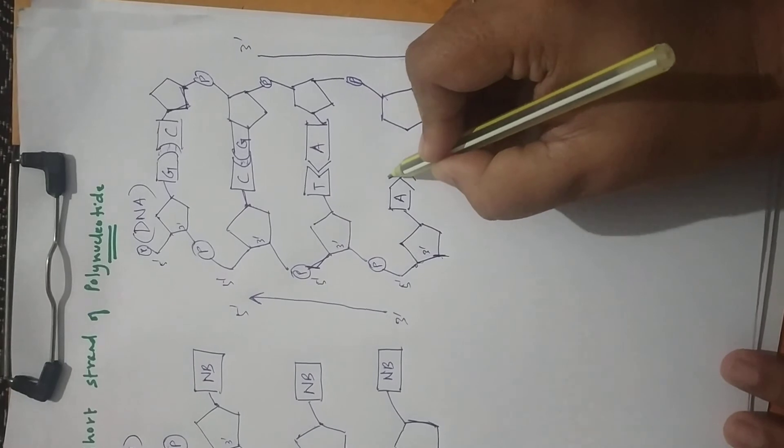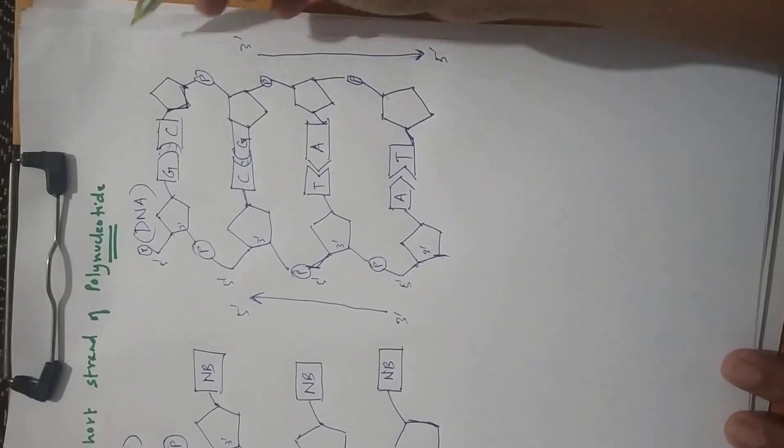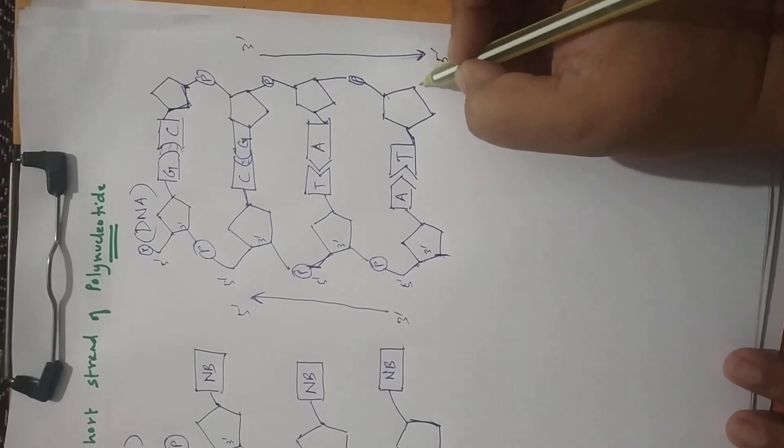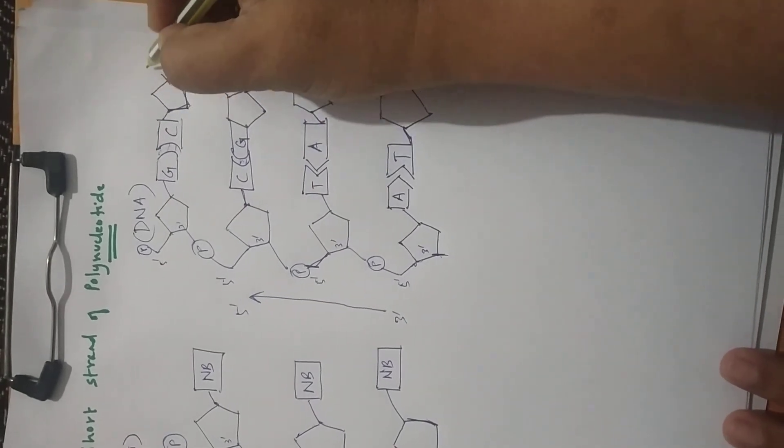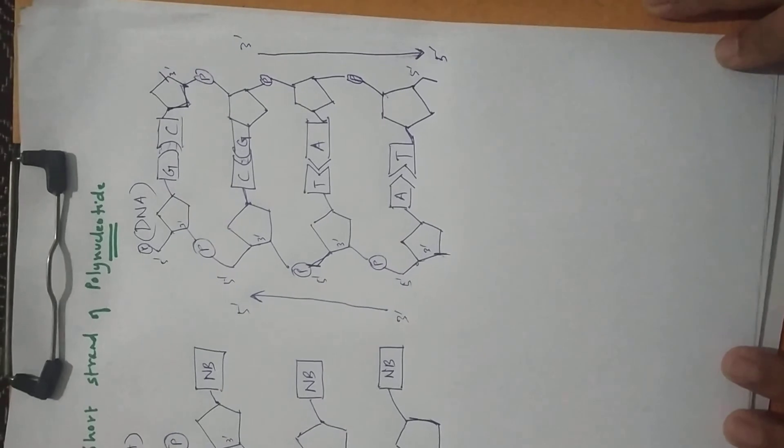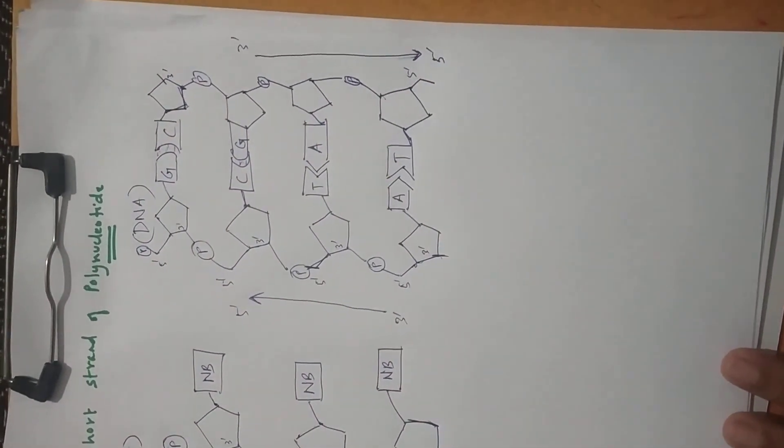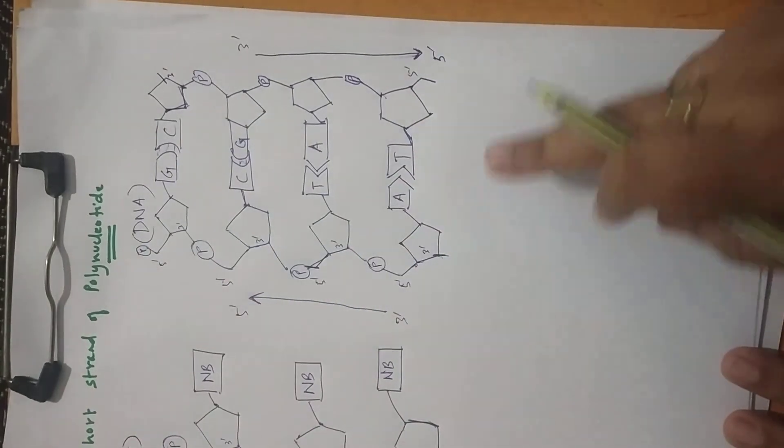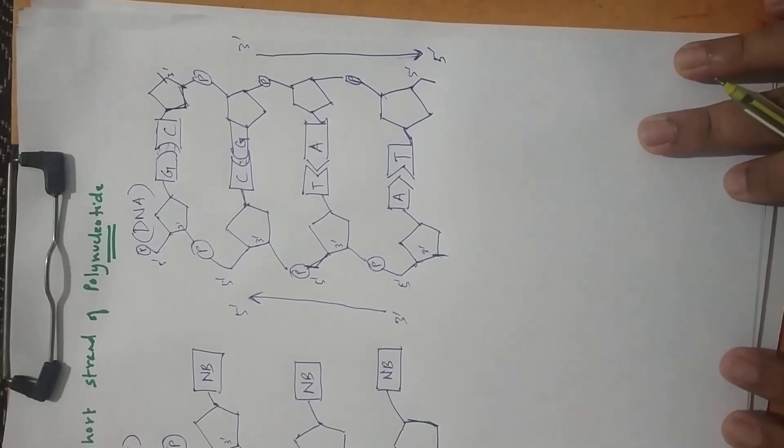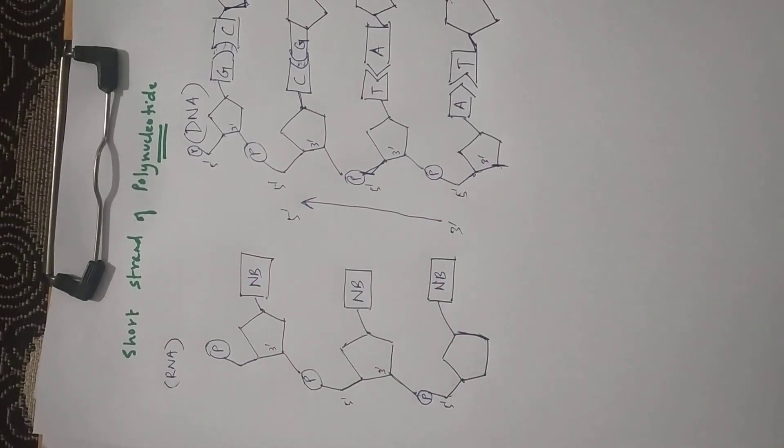So you can see the sugars are now in opposite direction. This is A and T, this is C and G. You can see the 5 prime end is 3 here, this is a 5, but the 3 here. This strand is anti-parallel to the other strand. So this is a short strand of the DNA molecule showing two strands complementarily base pairing with each other, and the other one is a short strand of RNA. Thank you.